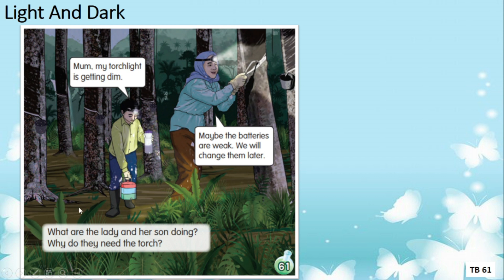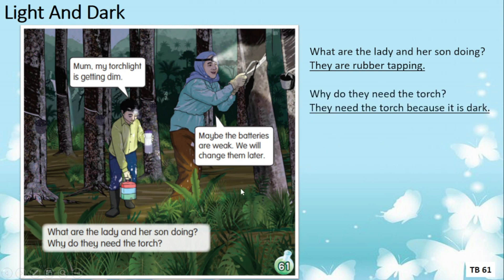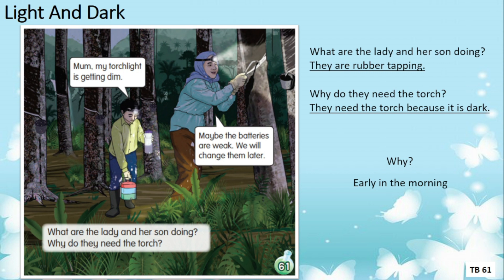Do you know what the lady and her son are doing? They are rubber tapping — menorah getah. Why do they need the torch? They need the torch because it is dark. Do you know why it is still dark? Because it's still early in the morning. Normally people go out for rubber tapping early in the morning before sunrise, so there is not enough sunlight.